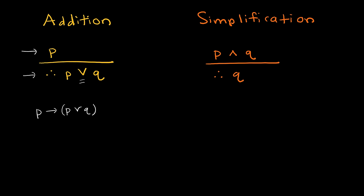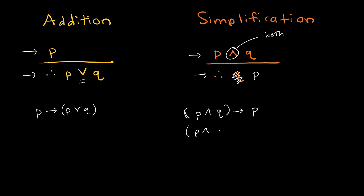Simplification is kind of the reverse. Here we're dealing with a conjunction — an 'and.' The premise is that P and Q is true, so both P and Q are true. The conclusion that Q is true is sort of a given. I could also use P instead — same rule. As a tautology: if P and Q, then P; or if P and Q, then Q — both are the same.